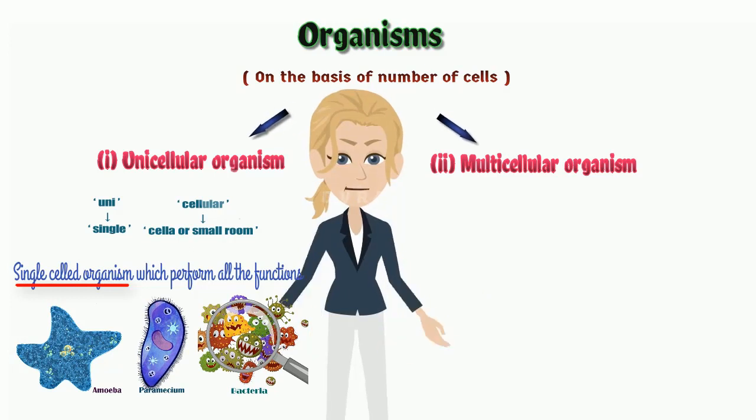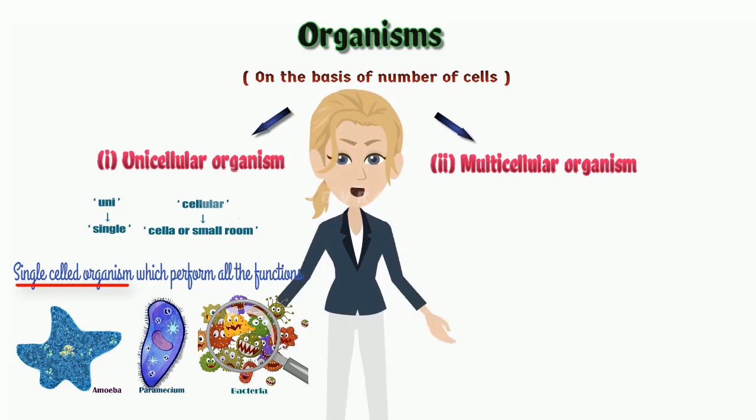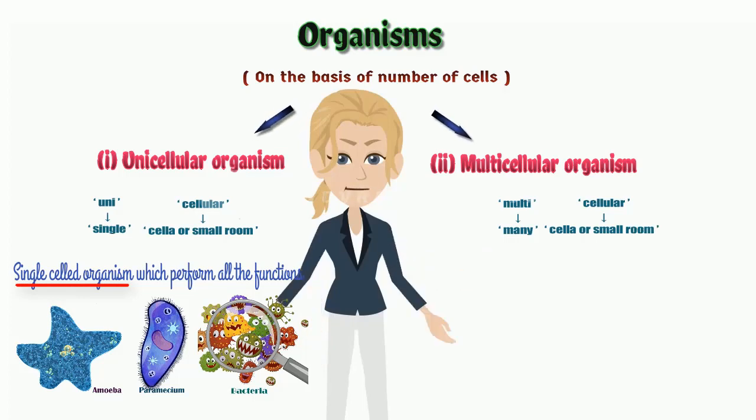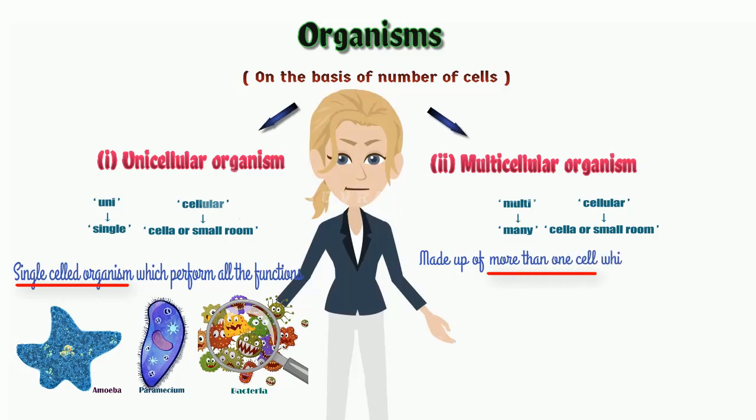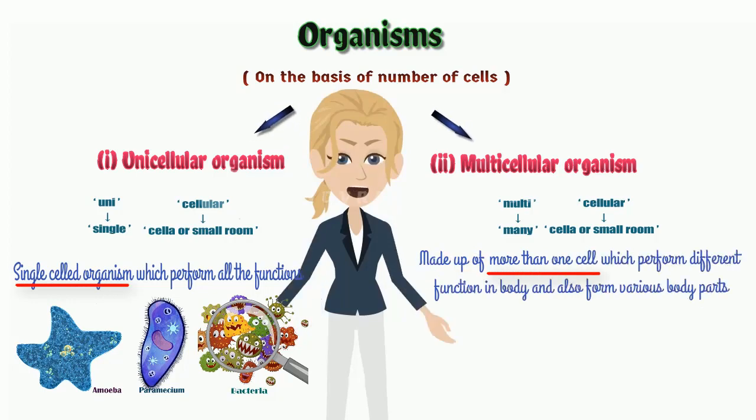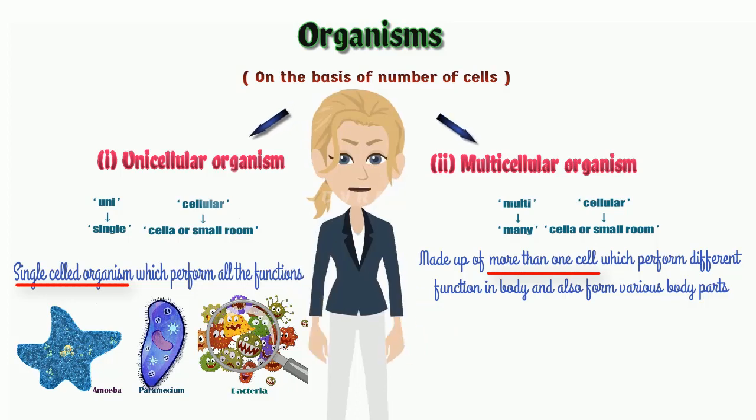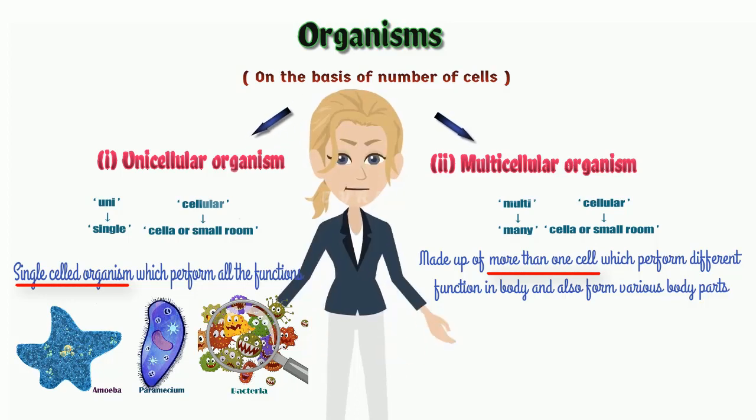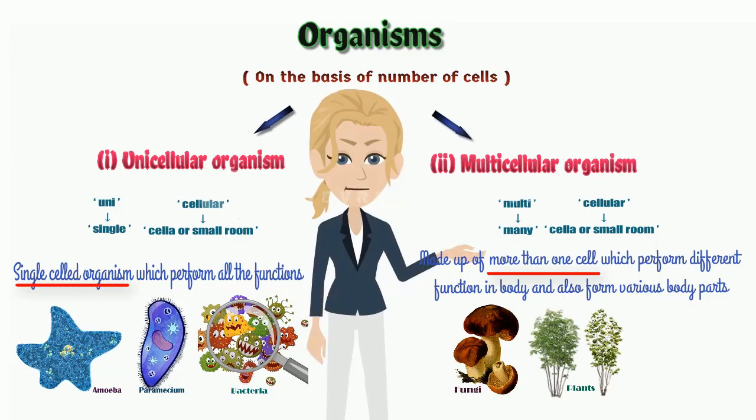Multicellular is also made up of two words. That is, multi means many and cellular means cell or small room. It means, multicellular organisms made up of more than one cell which perform different functions in the body and also form various body parts. For example, fungi, plants and animals.